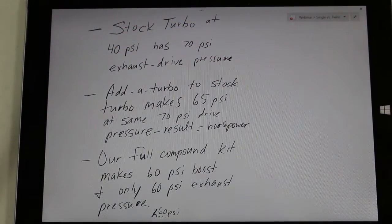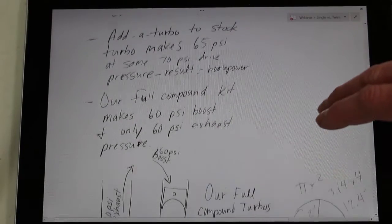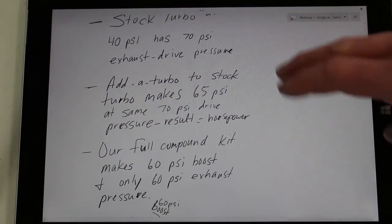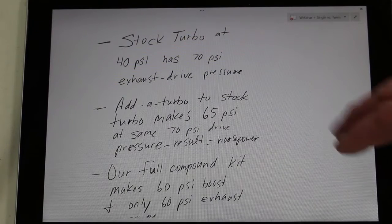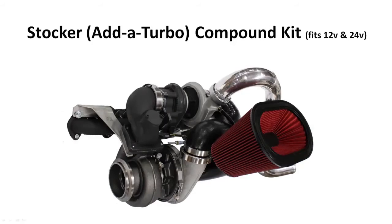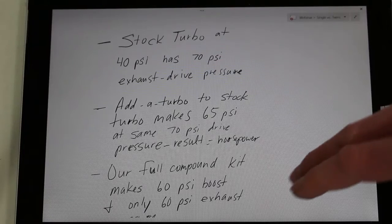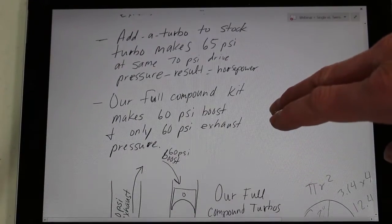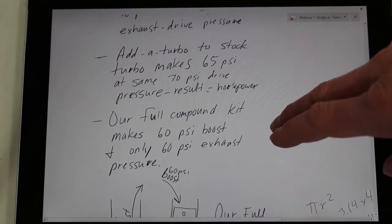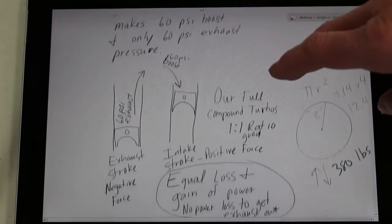For comparison's sake, if we do one of our added turbo kits, or like we call on the stock or S475, that compound kit will make approximately 65 PSI of boost when the exhaust drive pressure is at 70 PSI. Because the boost pressure is so much closer to the drive pressure, there's a net gain in horsepower bringing the boost pressure and drive pressure nearly to a 1 to 1 ratio, as our compound turbo kits all do.